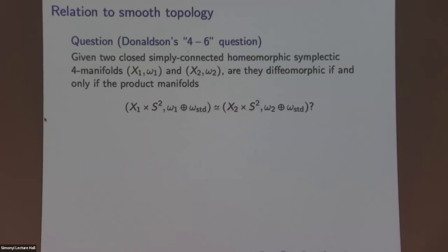So I'm interested in the relation to smooth topology. And then there's this question attributed to Donaldson, who asked, given two closed simply-connected homeomorphic symplectic manifolds omega_1 times M and omega_2, are they diffeomorphic if and only if the six manifolds obtained by stabilization, meaning that you take products with S2 with the standard form on it, whether those are deformation equivalent in the notion that we discussed on the first page? And let's call this stabilization.